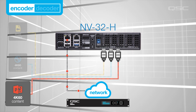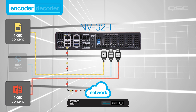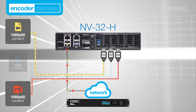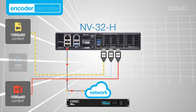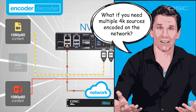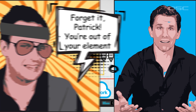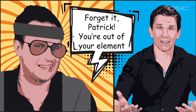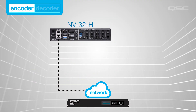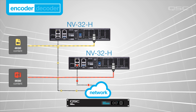But if you need to send two or more sources from a single encoder, then those video sources will be forced to 1080 rather than 4K. If you need multiple 4K sources encoded on the network, you simply need multiple NV Series units set to encoders to do this.